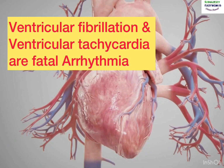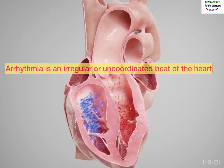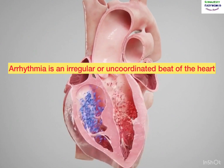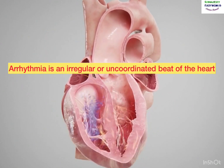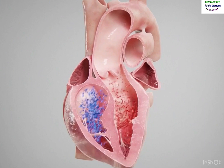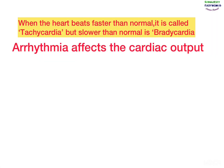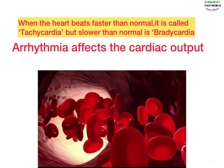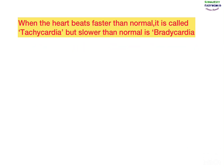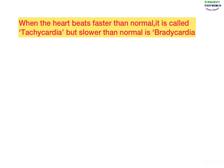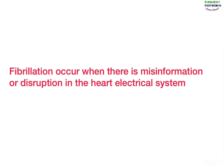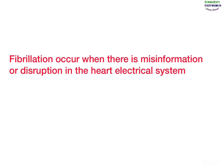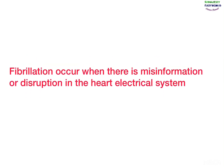This is why ventricular fibrillation together with ventricular tachycardia are fatal arrhythmias. Arrhythmia is an irregular or uncoordinated beat of the heart, and it affects the cardiac output — it might slow it down. And when this happens, the supply of blood to the heart itself is also affected.